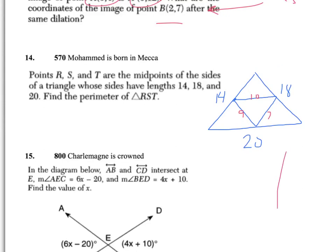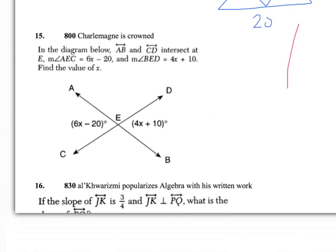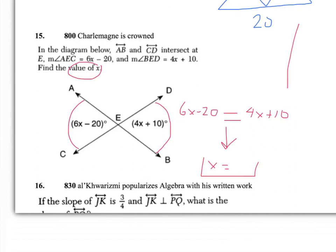Question 15 — Charlemagne is crowned. Those are vertical angles, and this should be pretty basic. These two angles are the same, so you say that they're equal to each other. Don't let the parentheses throw you off — they aren't even needed in this question. The good news is that all they want is the value of x, so once you find x, you are done.